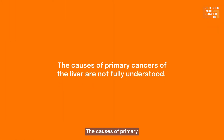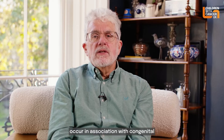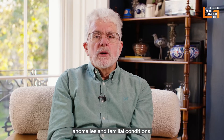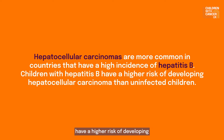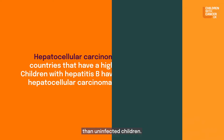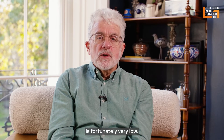The causes of primary cancers of the liver are not fully understood. A very small number of cases of hepatoblastoma occur in association with congenital anomalies and familial conditions. Hepatocellular carcinomas are more common in countries that have a high incidence of hepatitis B. Children who are infected with hepatitis B have a higher risk of developing hepatocellular carcinoma than uninfected children. However, the incidence of hepatitis B infection in children in the UK is fortunately very low.